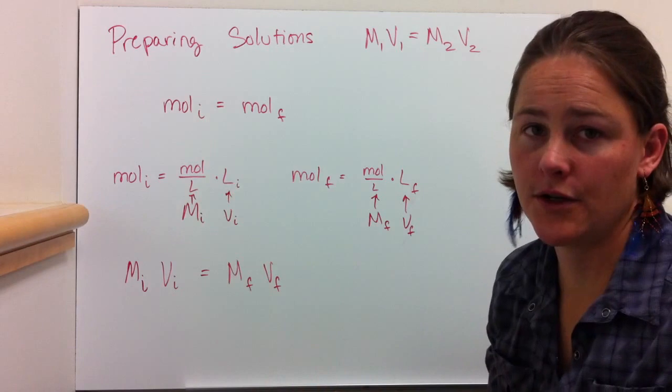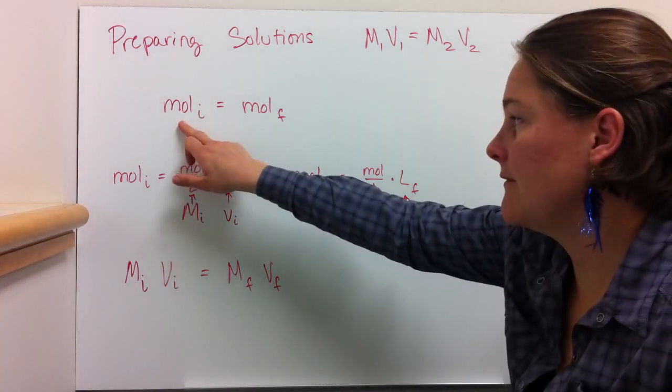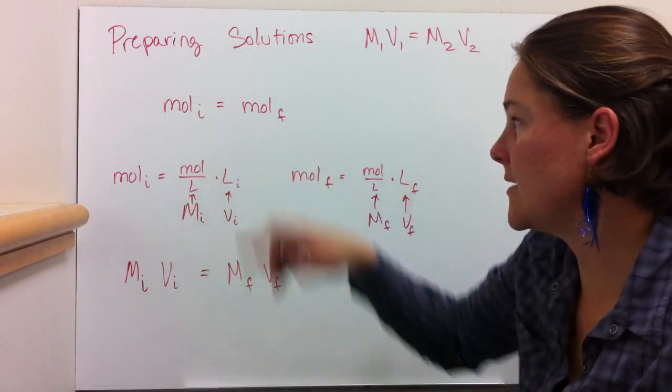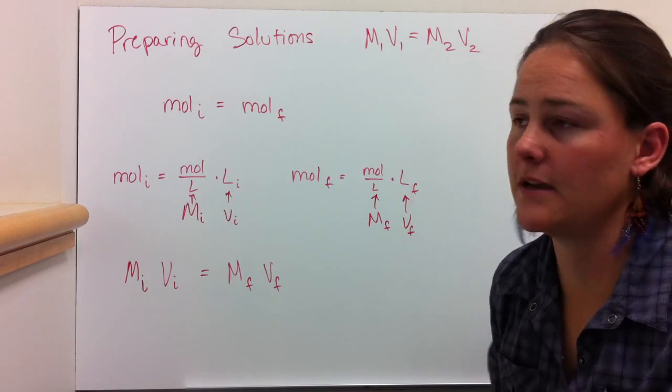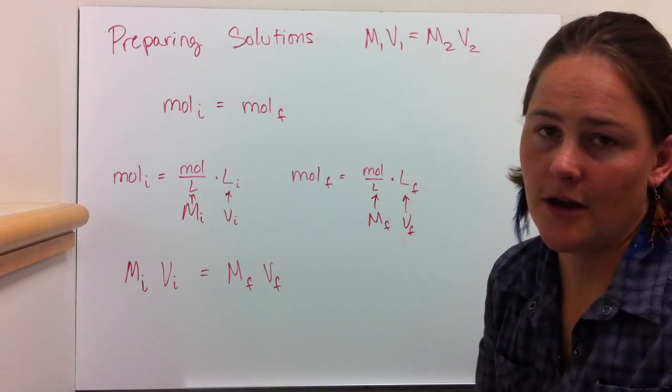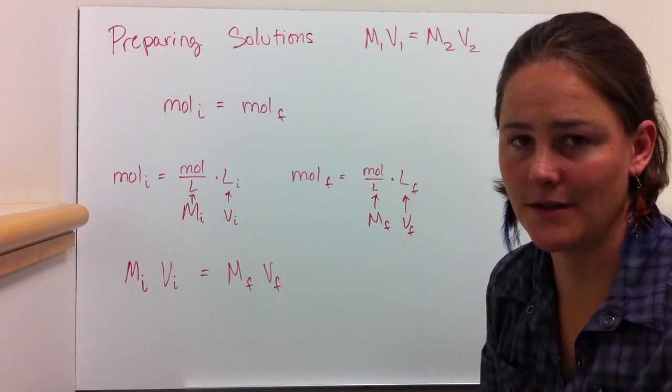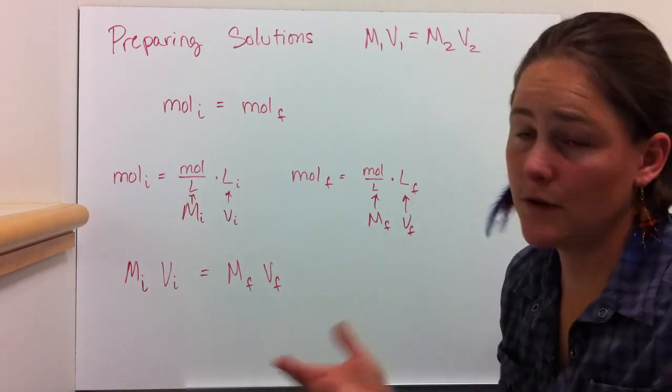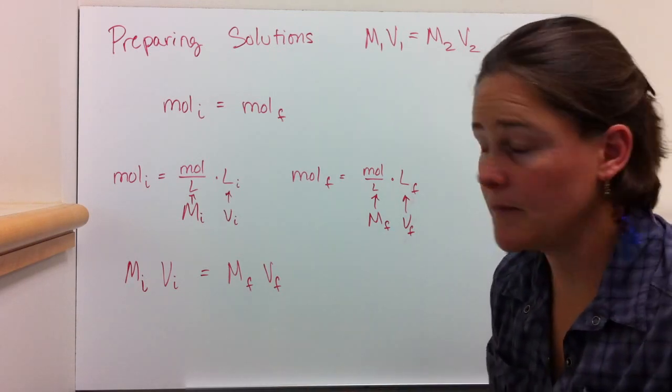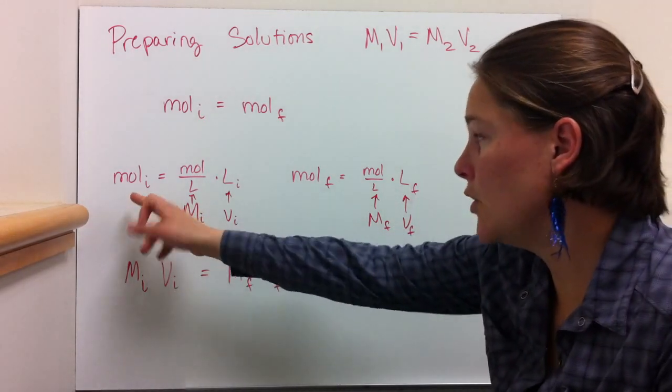Here if you have two solutions, the moles of the initial solution is the same as the moles of the final solution. So if you're making a 10x dilution, the amount that you add from the stock solution to the diluted solution, the moles of whatever it is is going to be the same. So moles is moles per liter times liters.